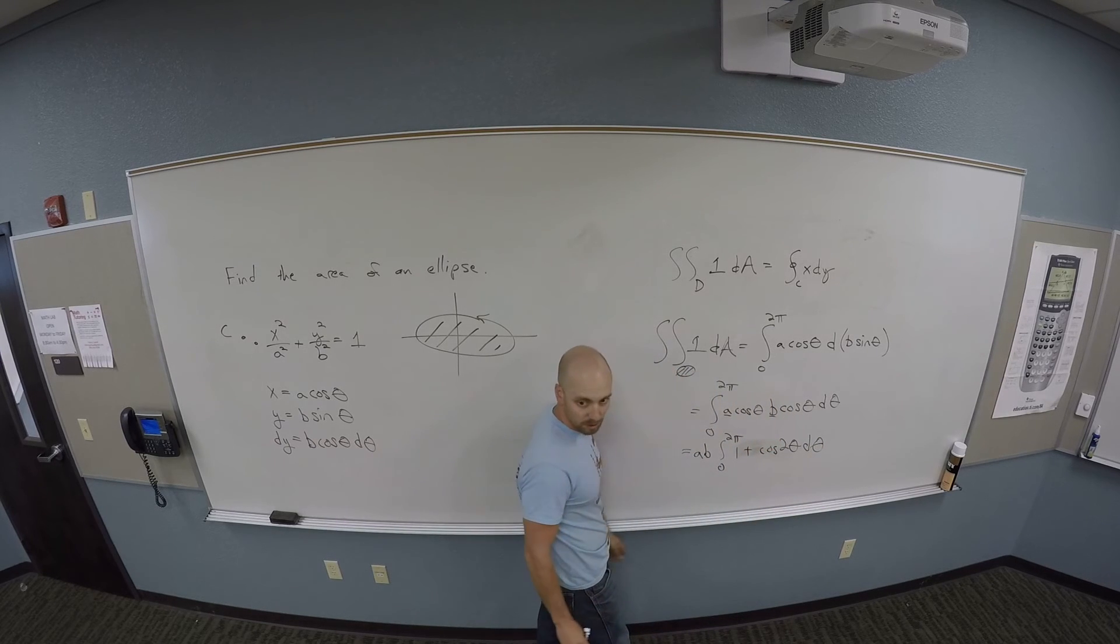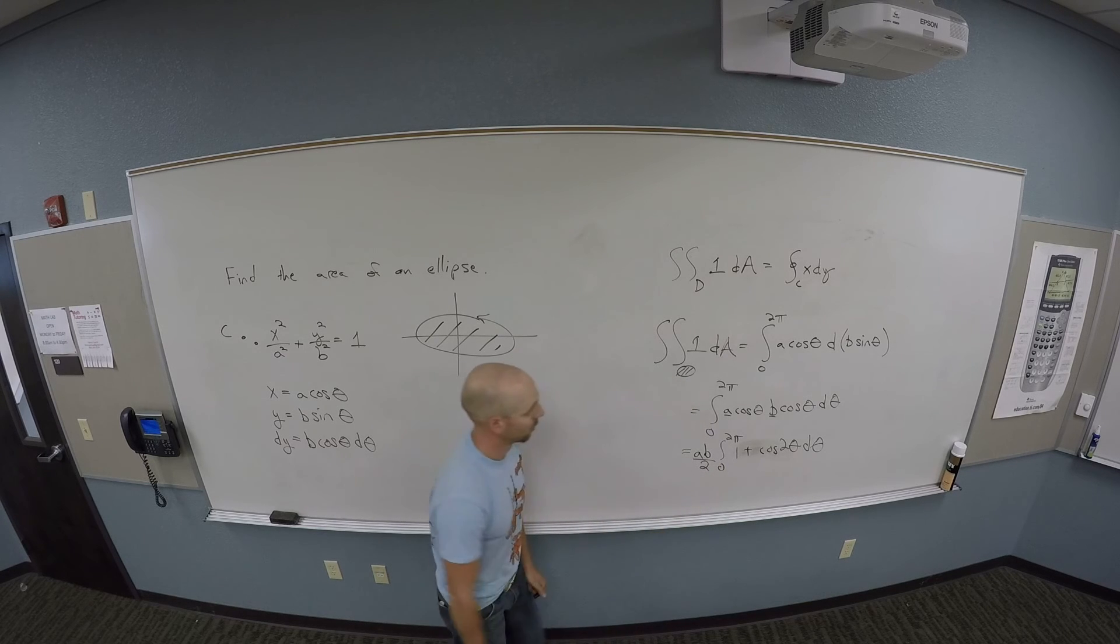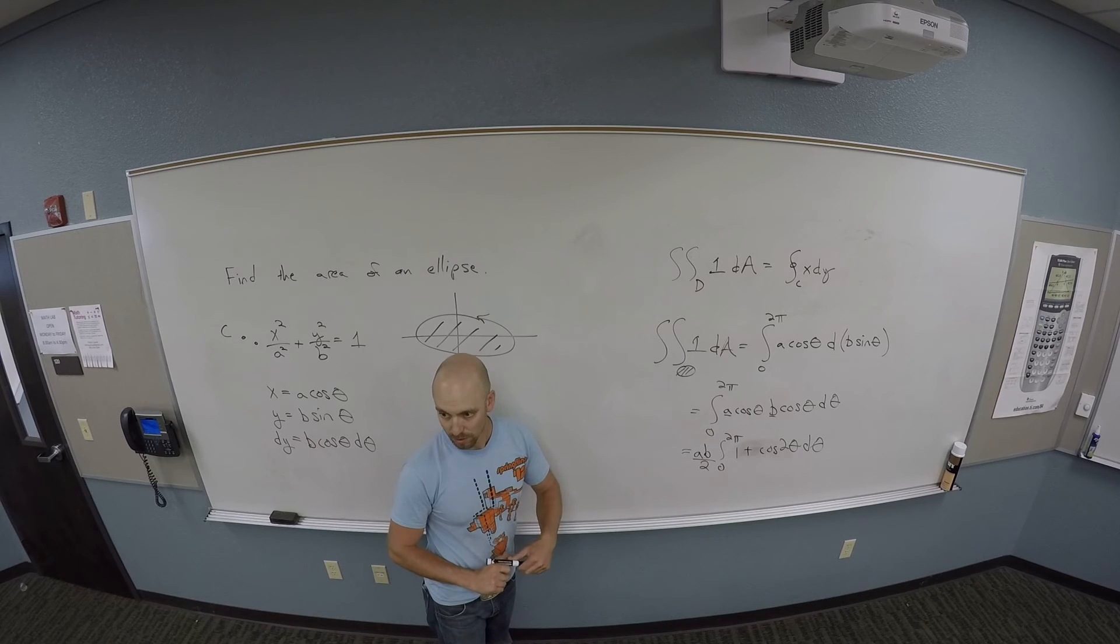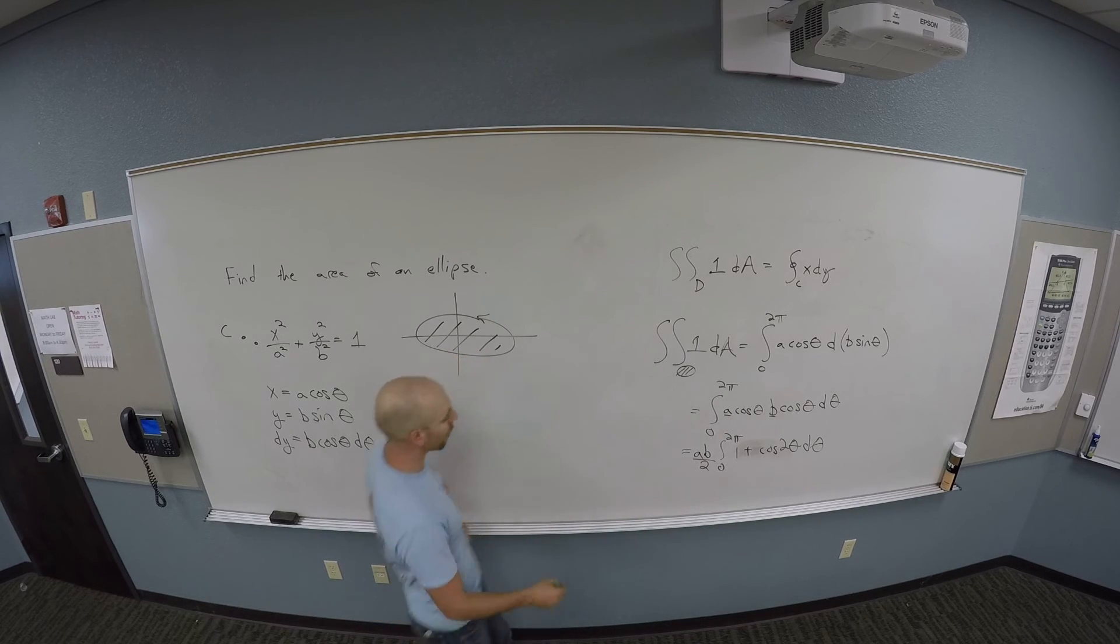So let me replace this with one plus cosine two theta d theta. And then take out the one half outside. There's a one half, so let me throw it out here. Couldn't you just do the one minus cosine squared? I guess you still have the square to work with. You could flip it to sines, but you've got the same problem.